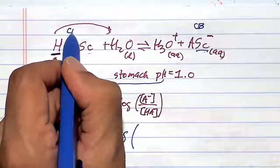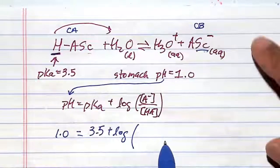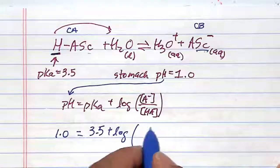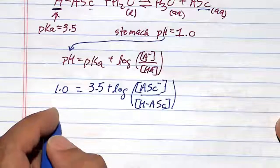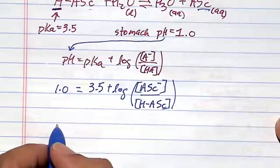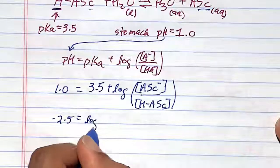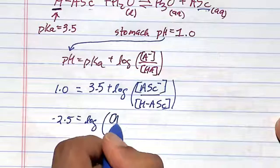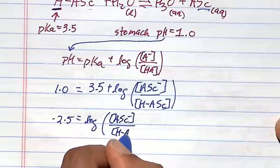This is the corresponding conjugate acid to that conjugate base. So the conjugate base here is 1 minus 3.5 is going to be minus 2.5.